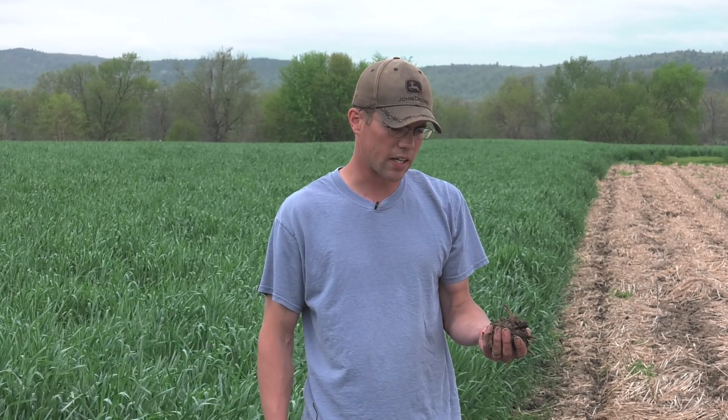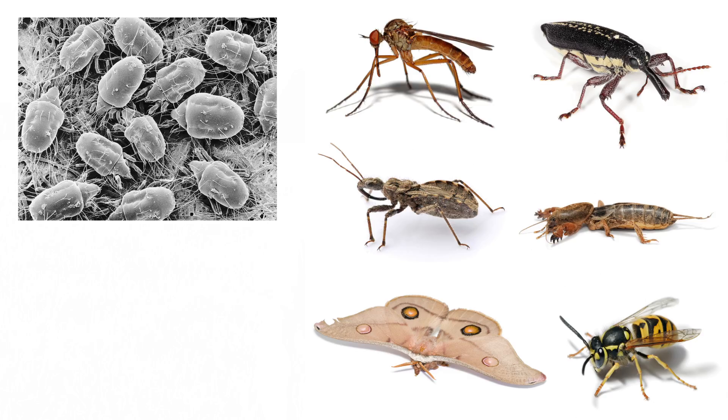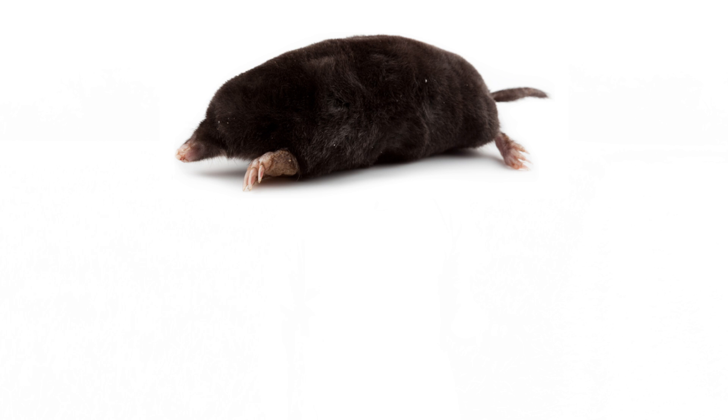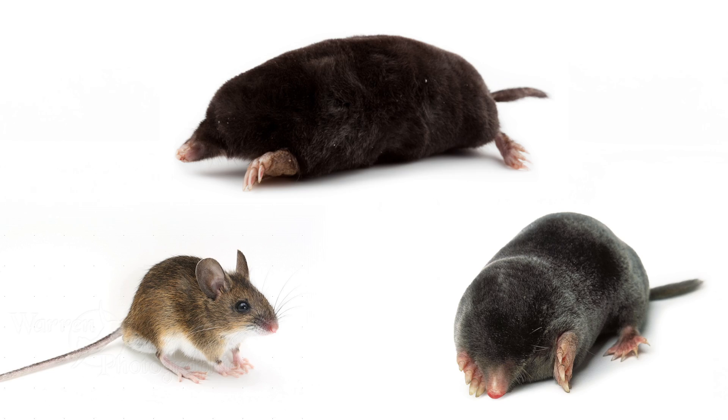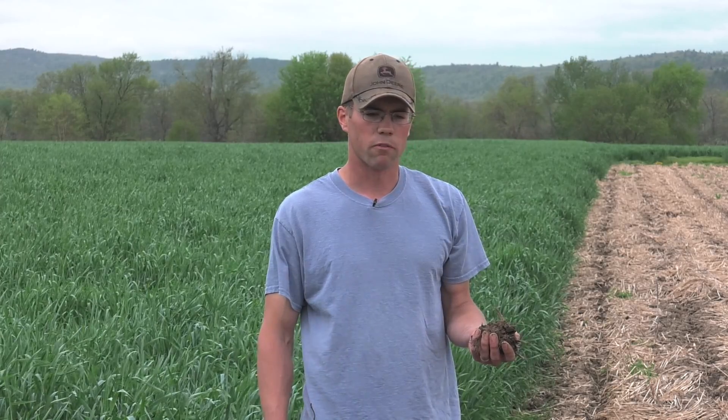Then you've got the larger organisms more visible to the human eye, such as arthropods, insects, bugs, earthworms, right up through smaller mammals like voles, moles, and field mice — they're all part of a soil ecosystem. We all know that plants make energy through photosynthesis, but many people don't know that plants are actually releasing up to 50% of that energy into the ground to attract soil biology.